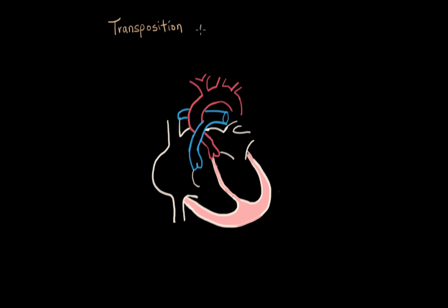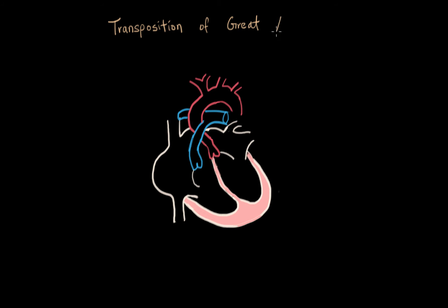Transposition of the great arteries. The two great arteries that come out of the heart are the pulmonary artery, which leads to the lungs, and the aorta, which leads to all the arteries in the body.